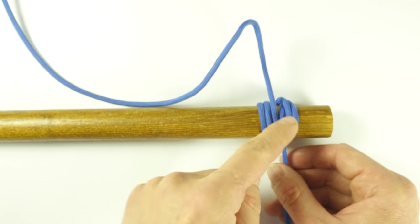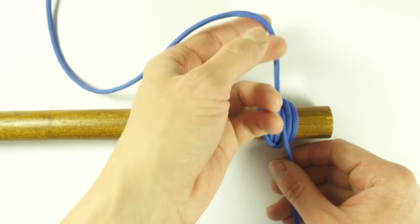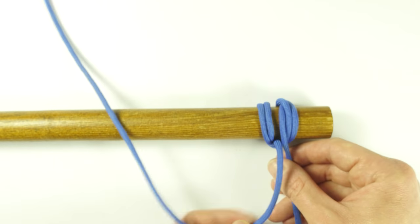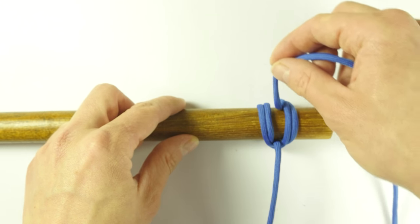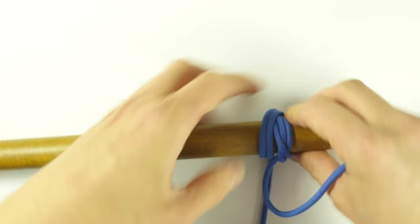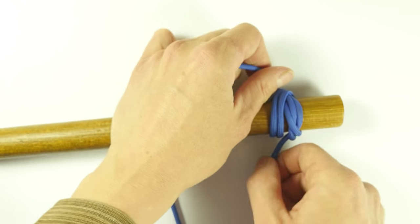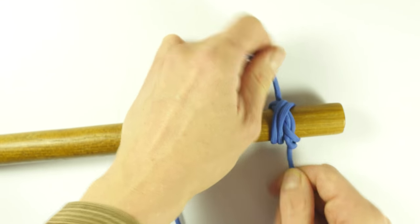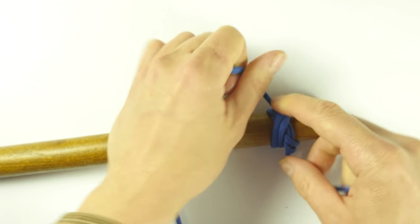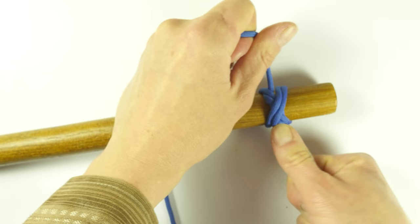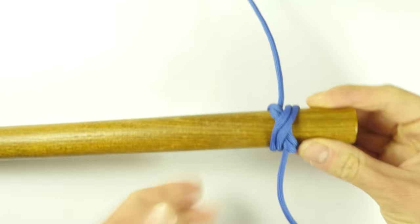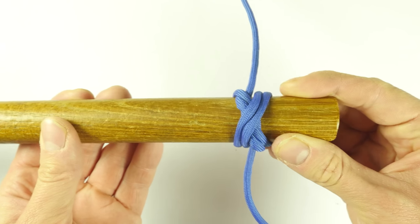Now switch the two ends, so the top one goes to the bottom, the bottom one goes to the top, and tighten up a bit more. At this point your boa knot is tied.